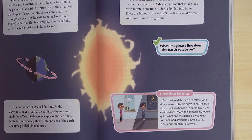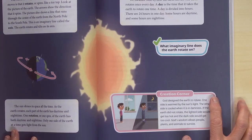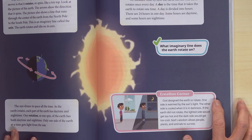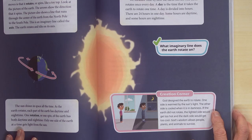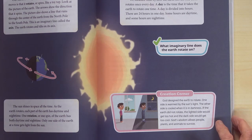Look at the bottom of page 87 — the section called Creation Corner. It says God designed the Earth to rotate. One side is warmed by the sun's light; the other side is cooled when it is in darkness. If the Earth did not rotate, the lighted side would get too hot and the dark side would get too cool. God's wisdom allows people, plants, and animals to survive. The sun warms the Earth. Why is it necessary for the Earth to rotate? Some places would get too hot and too cold if the Earth didn't rotate. This is part of God's wise and wonderful design — people, plants, and animals can survive because the Earth rotates.